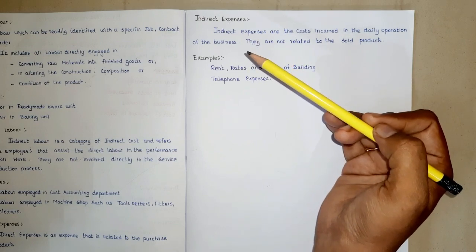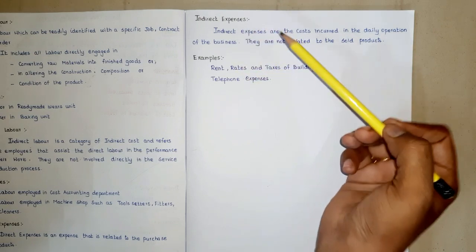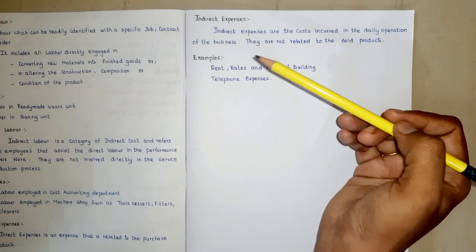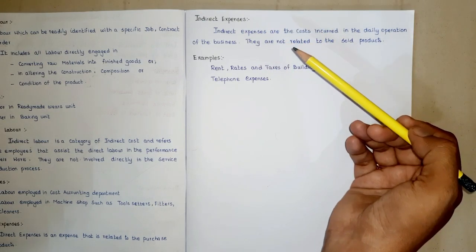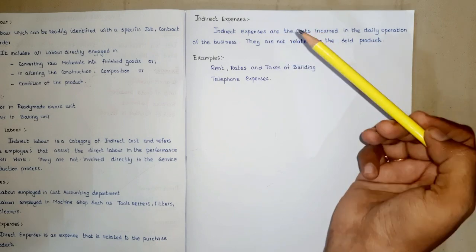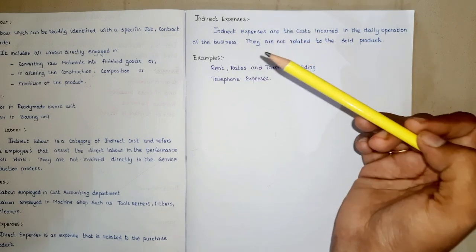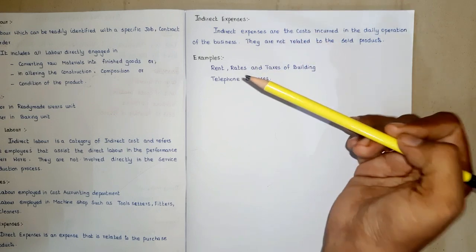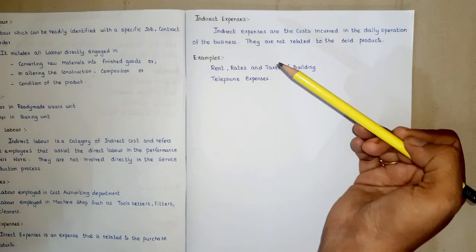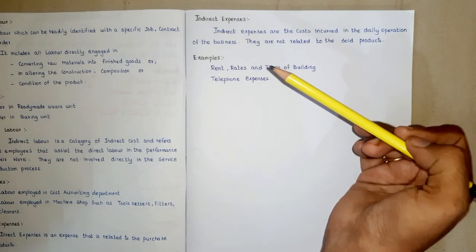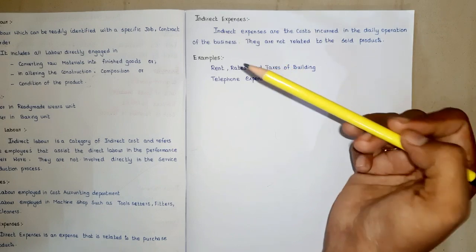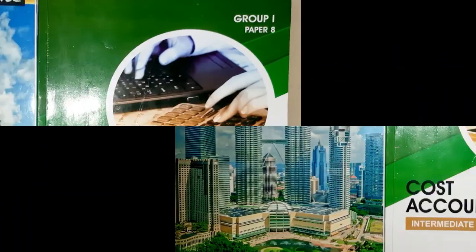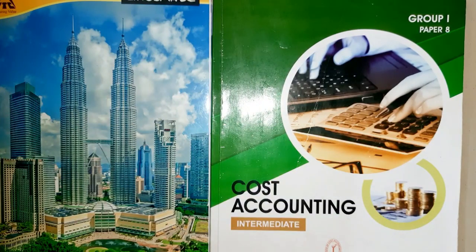But in addition to these expenses, there will be a number of other expenses which will be incurred not for the sole purpose of the book but for the benefit of all the work going on. For example, the building is used for all the work done, therefore it is not easy to say what exact amount of rent is to be allocated to the book. Similarly, the wages of clerical labor, supervisory staff, etc. cannot be easily allocated. Such expenses are known as indirect expenditure.